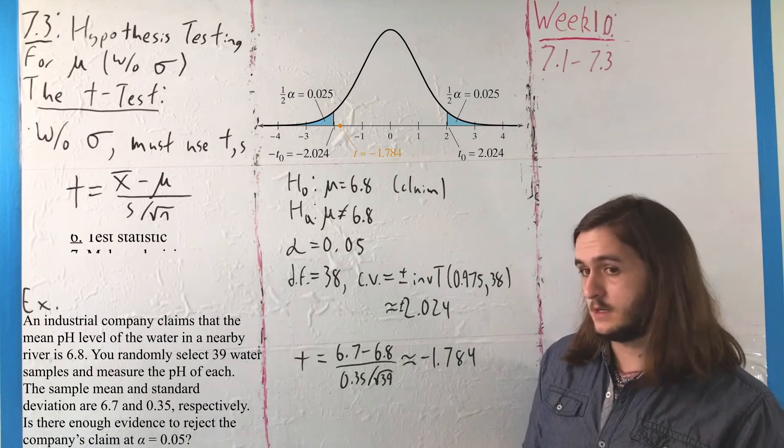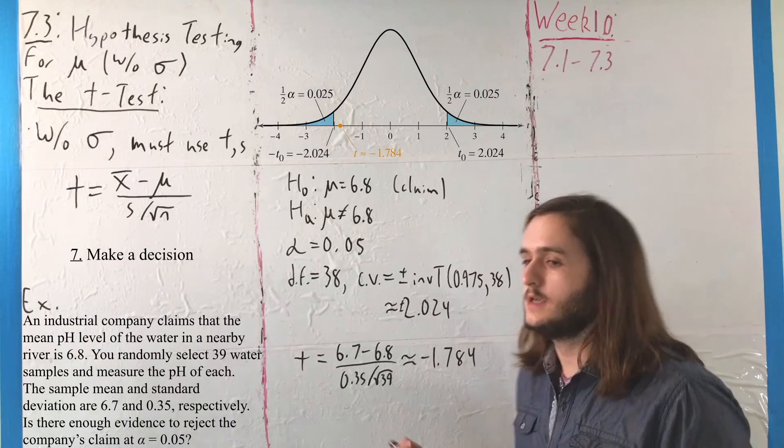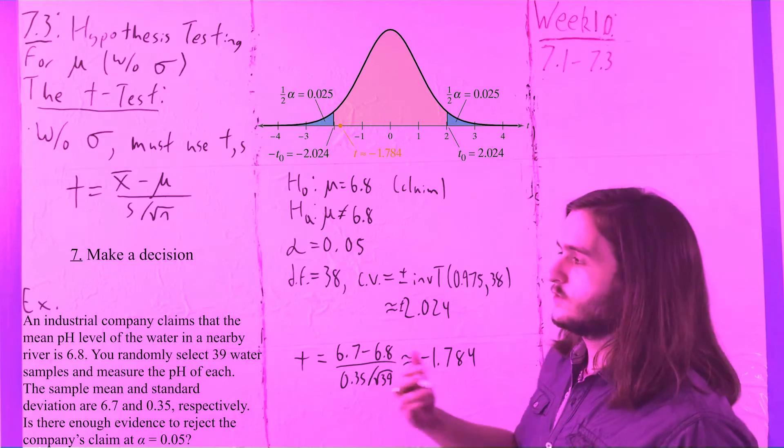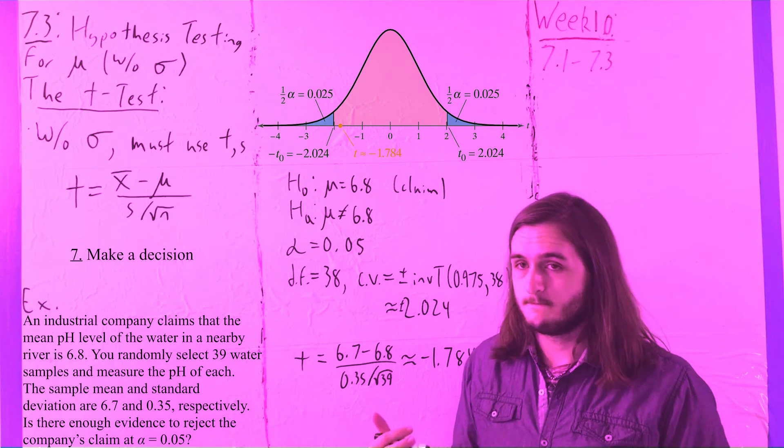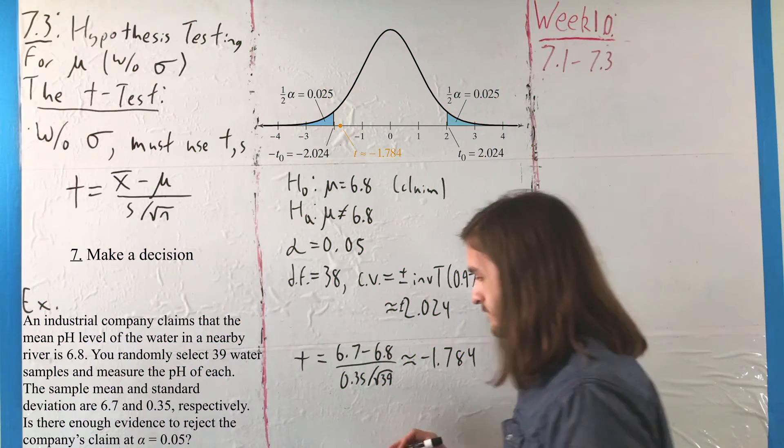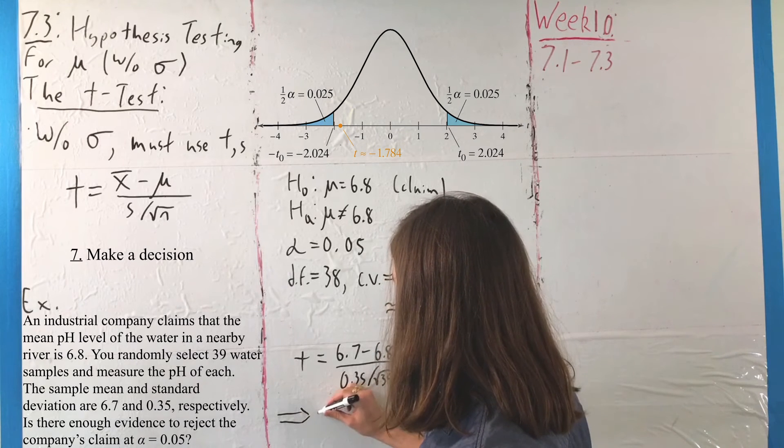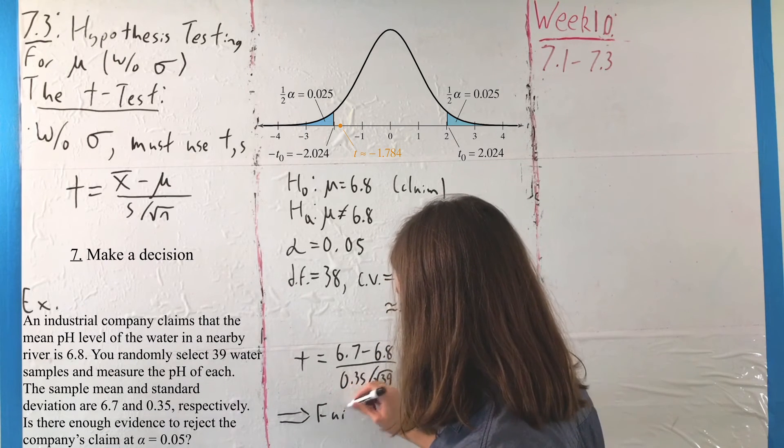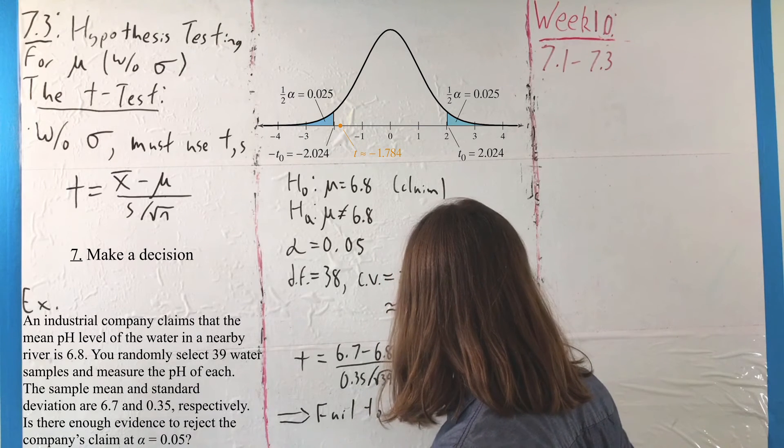So, because it is between those two values, because our test statistic is between, it is in the non-critical, or non-rejection, depending on how you want to call that, region, so we fail to reject the null hypothesis.